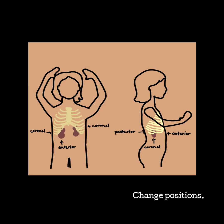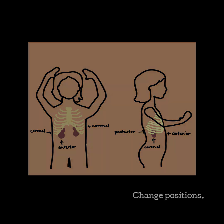Rolling your patient onto their side for either kidney allows the kidney to flop forward, which can be beneficial for the anterior window. It can also give you more access to the coronal and posterior windows.